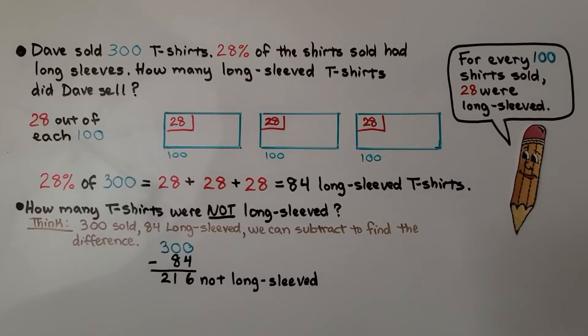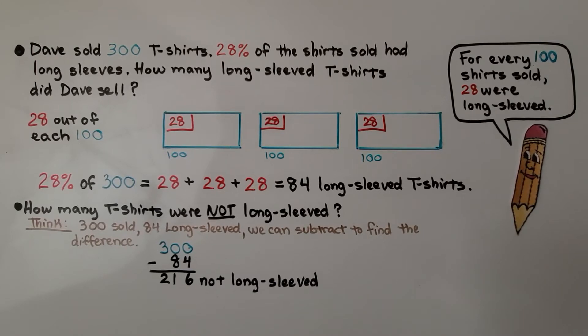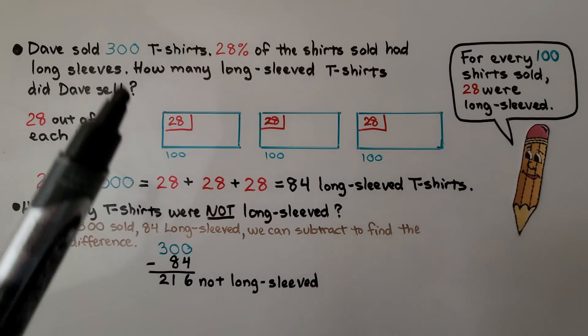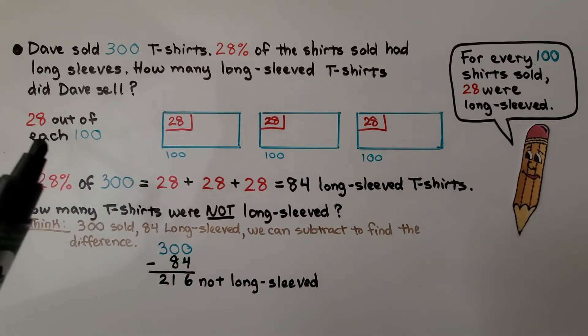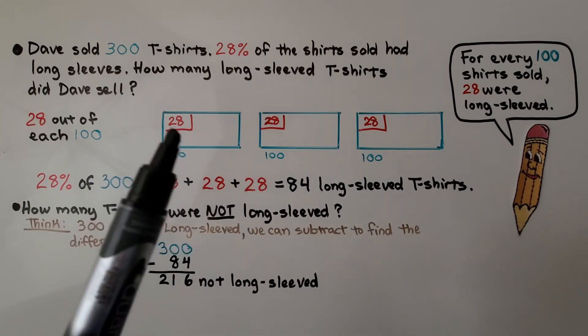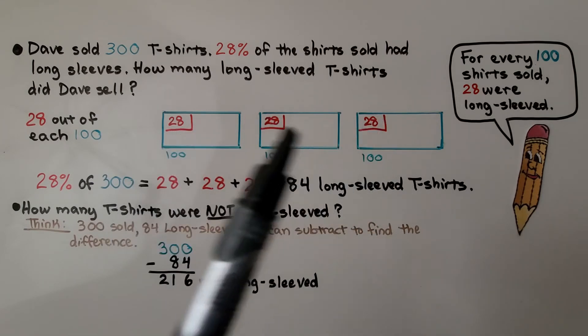Dave sold 300 t-shirts. 28% of the shirts sold had long sleeves. How many long sleeve t-shirts did Dave sell? 28% of 300 means 28 out of each 100. We have 100, 200, 300. We have a 28 for each 100.